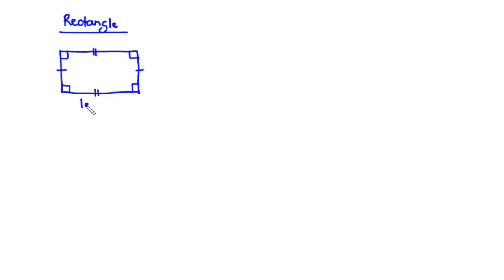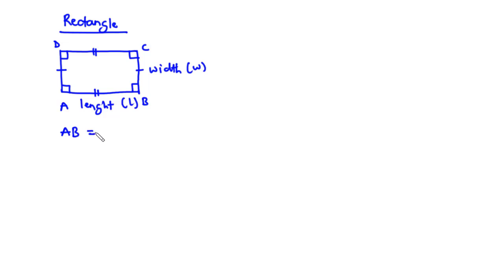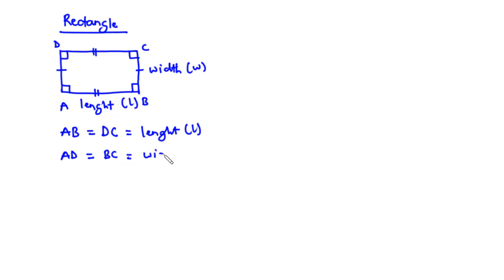Let's say this is the length of the rectangle and this is the width. If this is rectangle ABCD, then side AB equals side DC — this is the length L. Also, side AD equals side BC — this is the width W.